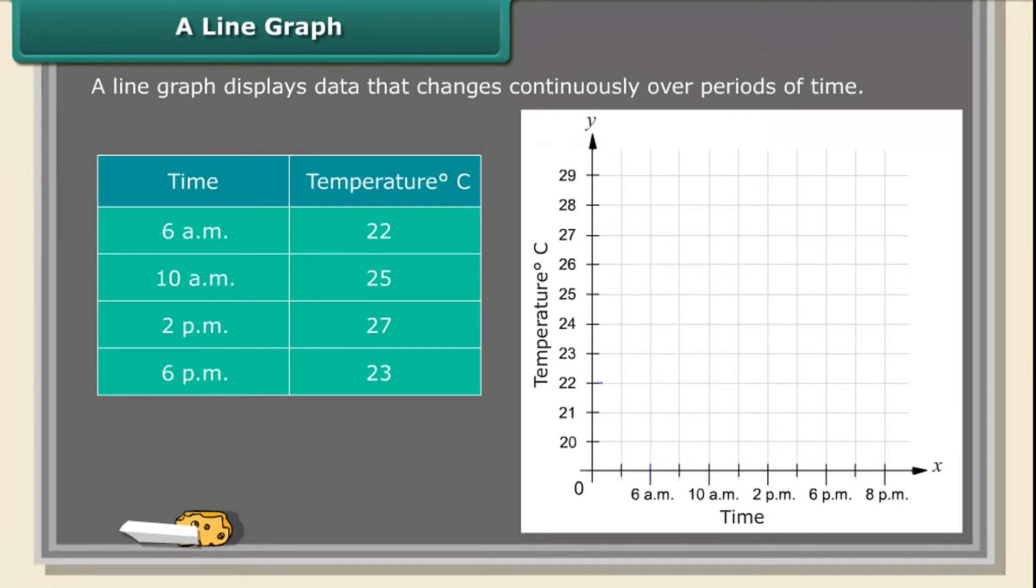We call this a time-temperature graph. The horizontal line x-axis shows the timings at which the temperatures were recorded. The vertical line y-axis denotes the temperature. The temperature of every four hours is recorded and plotted as points as shown in the graph. These points are connected by line segments.